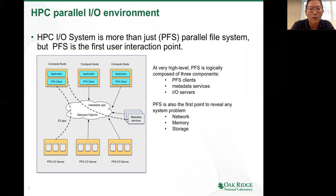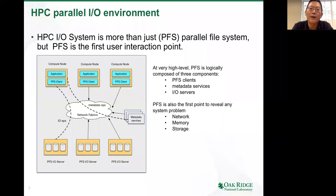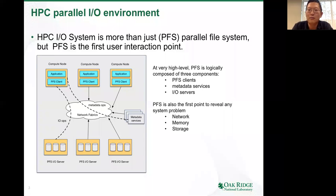This figure illustrates how these different components are related to each other. Starting from the compute node where your application is running, the PFS client is beneath the application layer and handles your IO requests. If the IO request is a metadata operation — say you create a file, delete a file, or modify file attributes such as access bits — it will be relayed to the metadata services. If the IO request is about reading or writing data, then it's likely to involve the IO services.